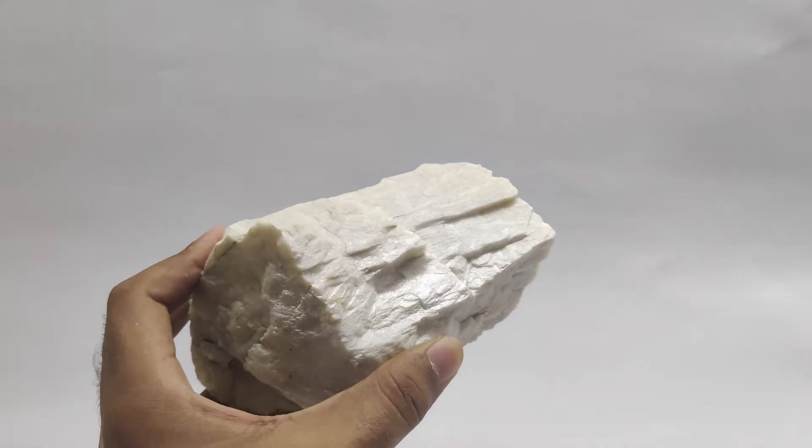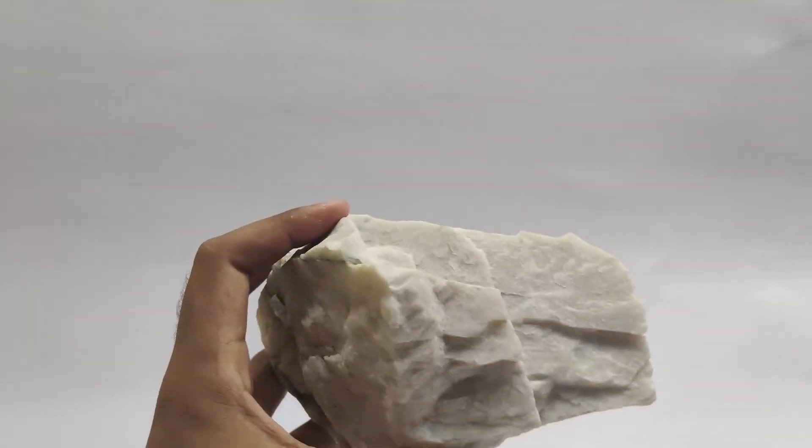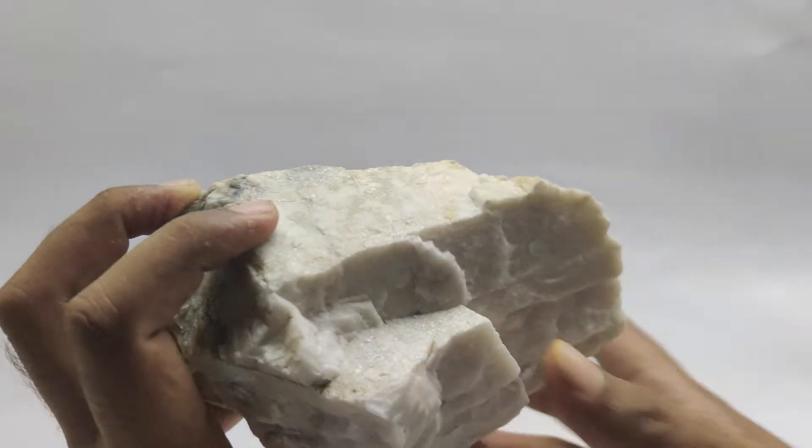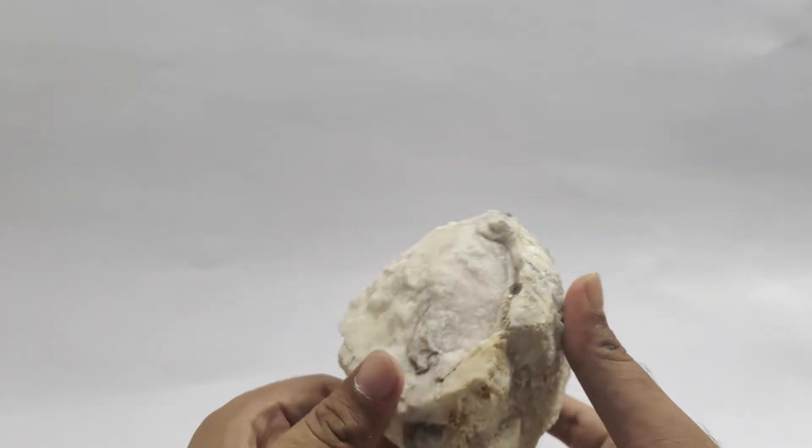Potash feldspar is an important raw material for ceramic and glass industries. It has many properties that make it an essential mineral for these industries, such as a high melting point, low expansion coefficient, and low viscosity.